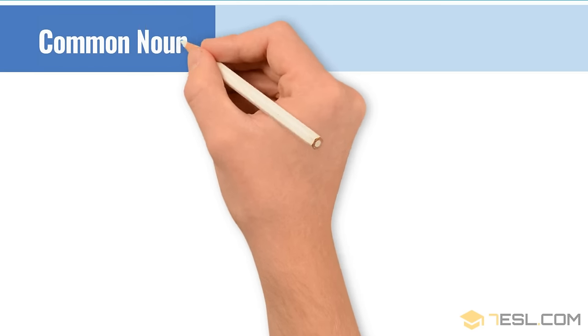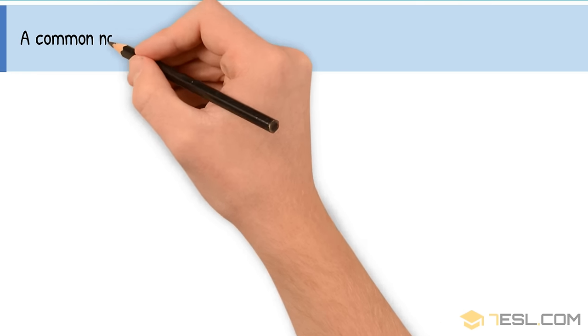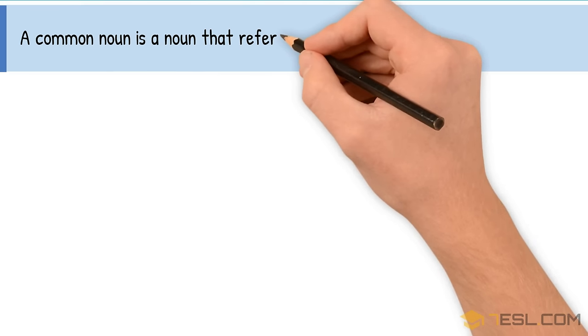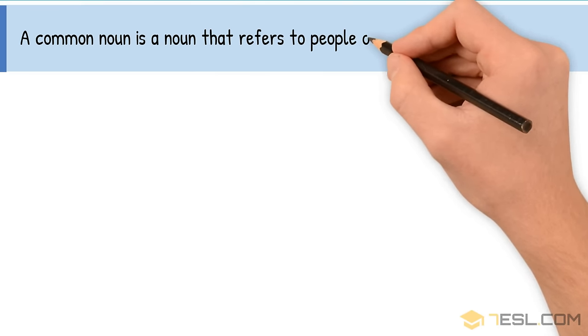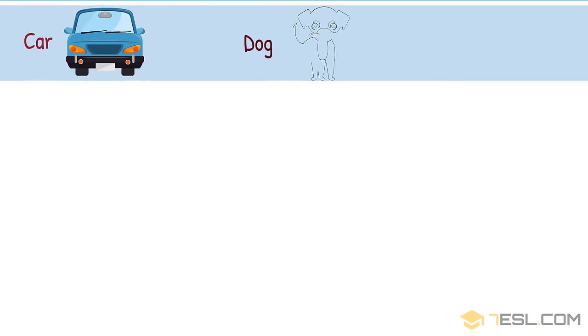Common Noun. A common noun is a noun that refers to people or things in general. Examples: car, dog, chair.